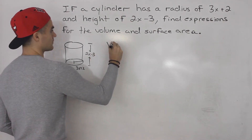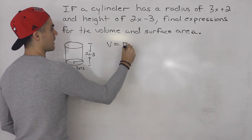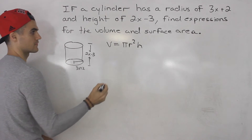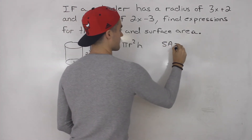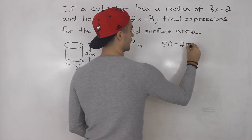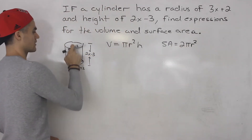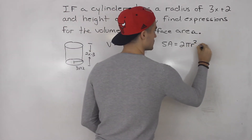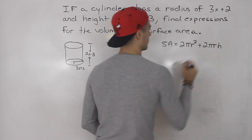Now what's the volume of a cylinder? Well we know that it's pi r squared times the height. And then the surface area is equal to 2 pi r squared — the areas of the two circles — plus the area of the side which is 2 pi r h.